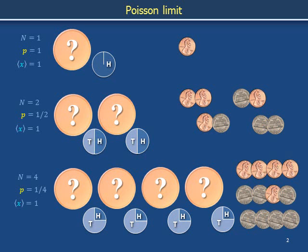Abstract from these three situations a process in which we allow N to increase without bound. In these examples, we hold constant the expected number of heads obtained from experiments each consisting of N tosses. In order to hold the expectation of x constant despite boundless increases in N, we allow p to decrease arbitrarily toward zero in a compensatory fashion.